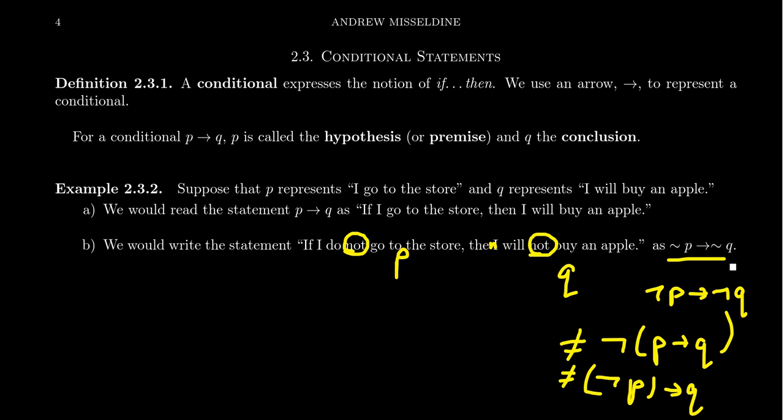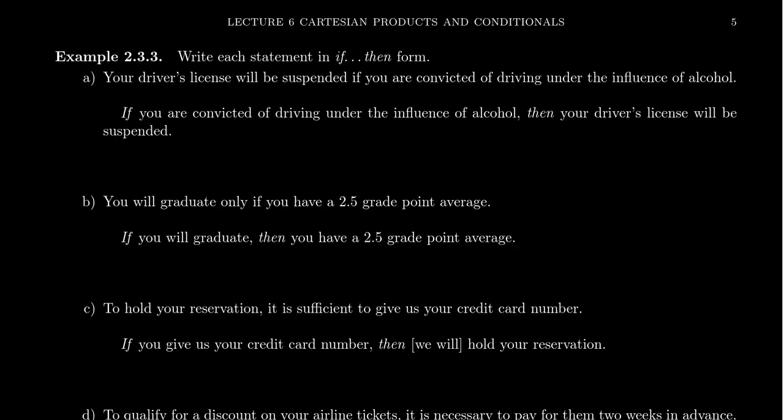The notation removes any confusion so that we know these three things all give us different statements. We have to be able to express conditional statements in if-then form. To write a conditional in the if-then format means we've correctly identified who is the hypothesis and who is the conclusion. If we don't know the hypothesis and conclusion of the conditional, we don't really know the conditional. Let's look at a few examples of conditional statements not written in if-then form that we can translate.